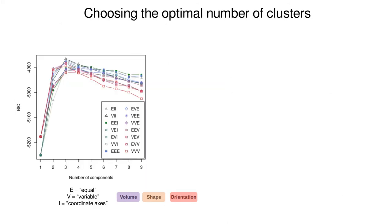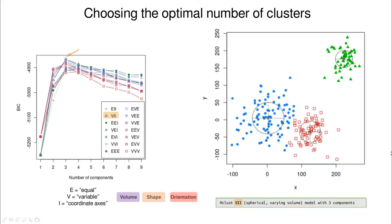Let's identify the optimal number of clusters. The good thing about mclust is that it tries all possibilities and compares them using the Bayesian Information Criterion, which penalizes for the number of parameters. More complex models are penalized more, but you need to find the balance. In this case the winner is VII — variable volume, shape and orientation aligned with the axis — meaning spherical clusters of different sizes.